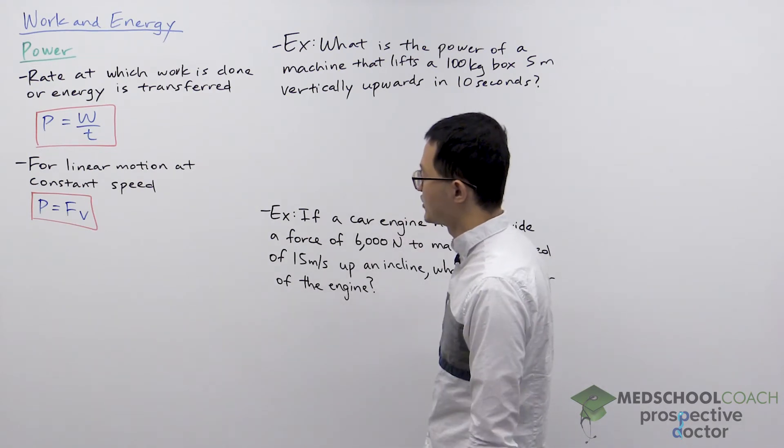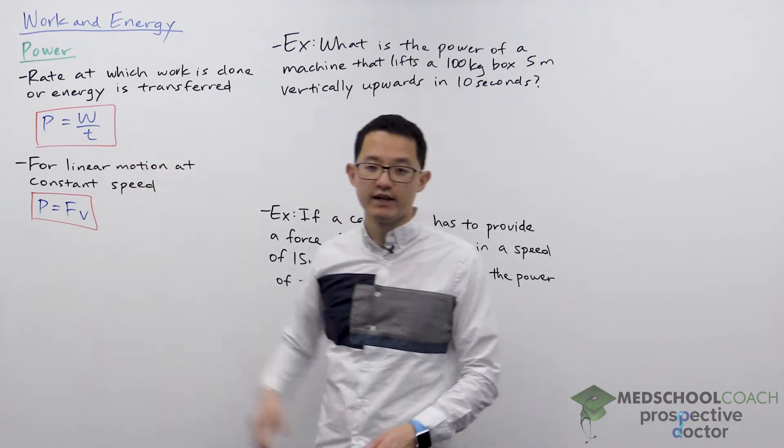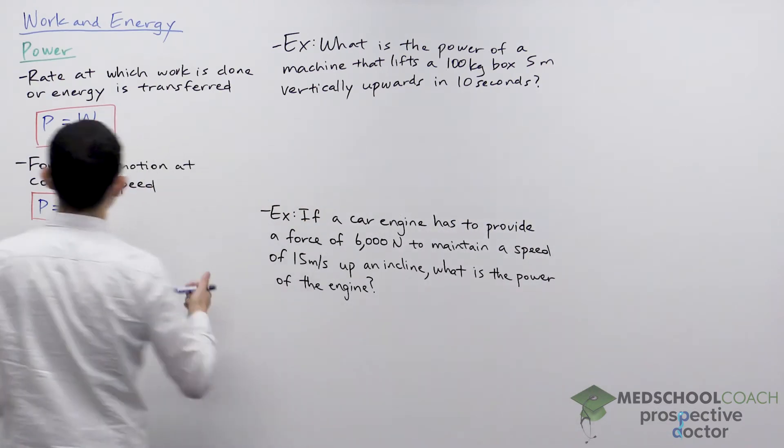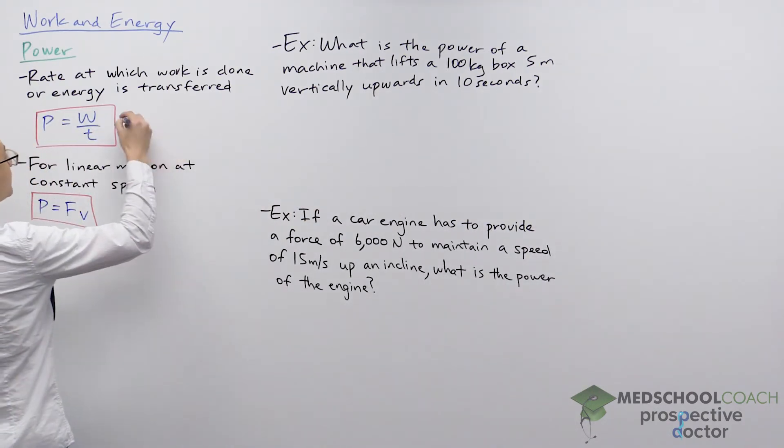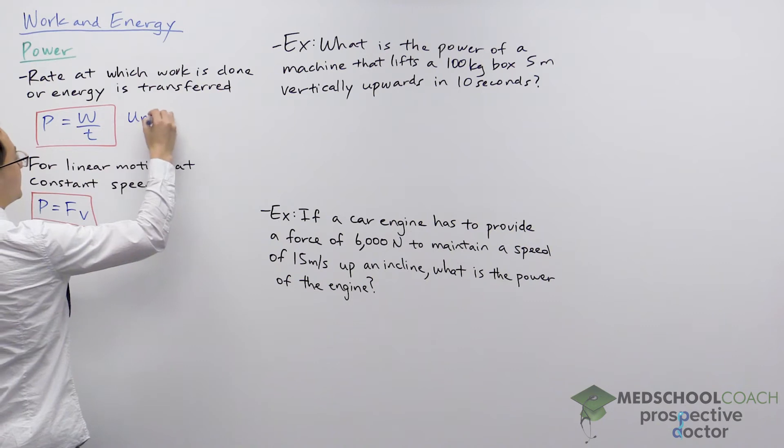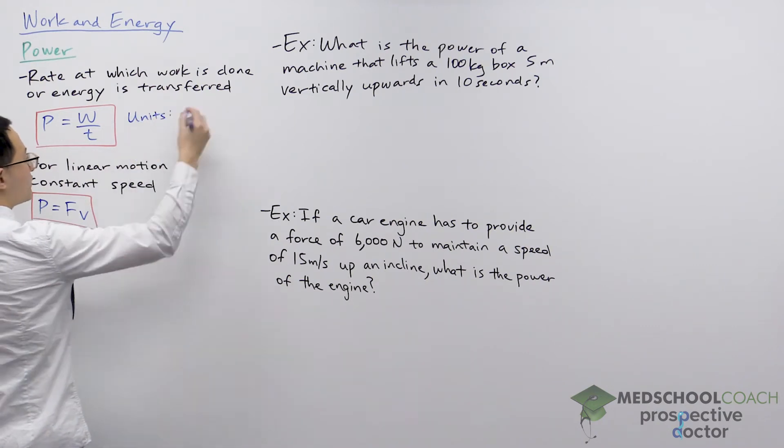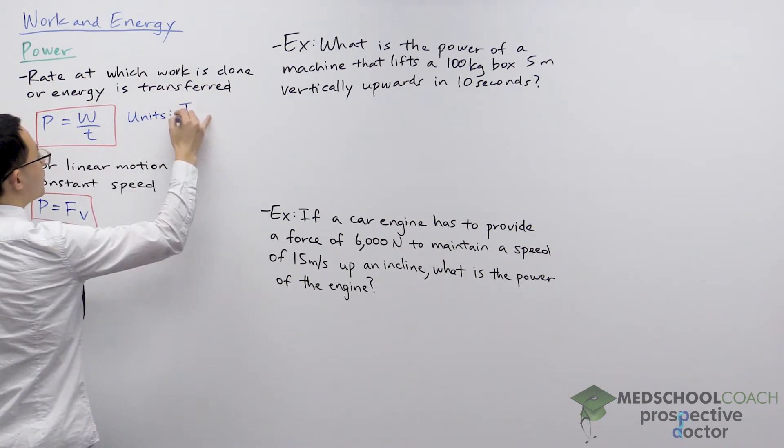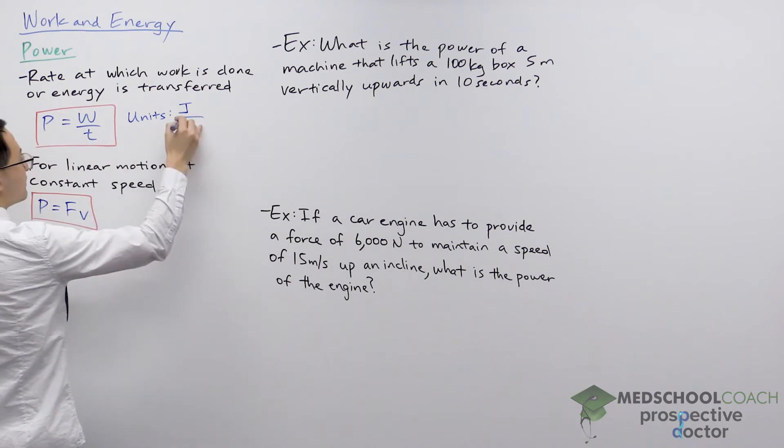So the equation for power is work divided by time, which tells us what the units of power is going to be, that the units is work, which we know the unit is joule, and time we know is a second.